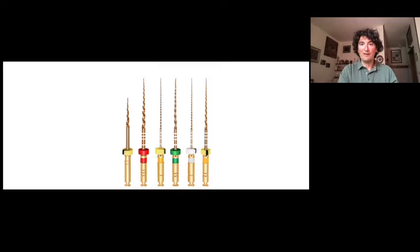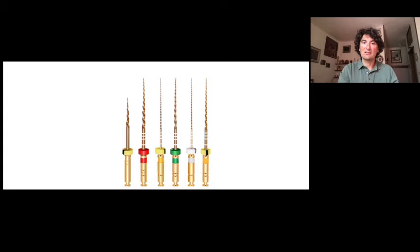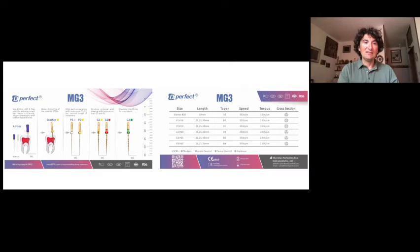Nowadays, I want to introduce what I am using from Perfectendo: the MG3 kit and MG2 kit — because they are really nice as a concept. Inside the kit we can find what we need for pre-flaring, what we need for glide path, and what we probably need for shaping or enlarging canals while reducing the taper. Because this is the secret: if we increase the size of the tip, the idea is also to try to reduce the taper. In this way, I will be more conservative. Let's talk about MG3 — of course, they are heat-treated.